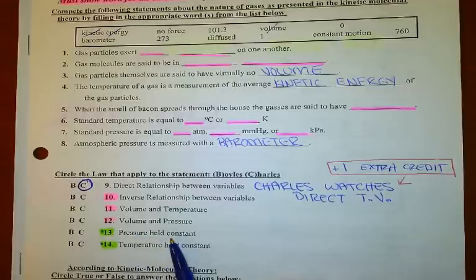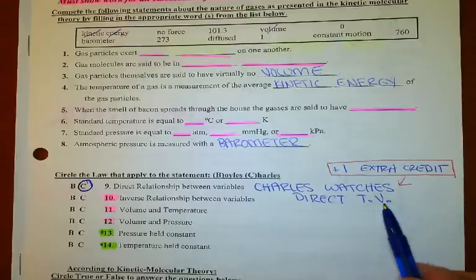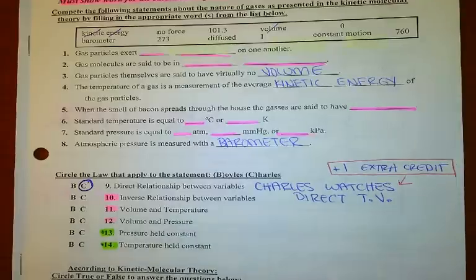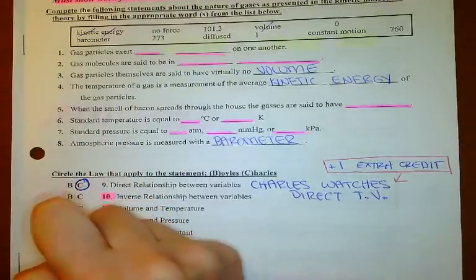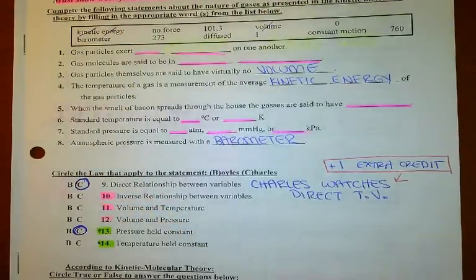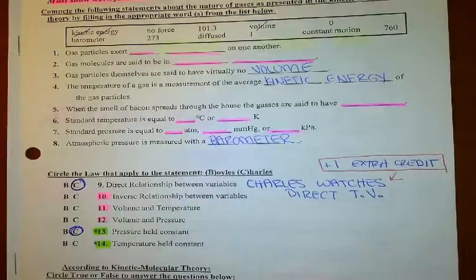Looking down here, pressure is held constant and temperature is held constant. Remember, the variables in Charles' Law are T and V. So things that are varying or changing would be temperature and volume. Something that's constant — not in his equation — would be pressure. So if pressure is held constant, that would be Charles, because pressure is not in his equation as a variable.